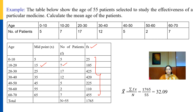Applying the formula x̄ = Σfx / n, we get 1765 / 55, which gives the average age of the patients in this data set. This is how we find the average, or arithmetic mean, for continuous observations.